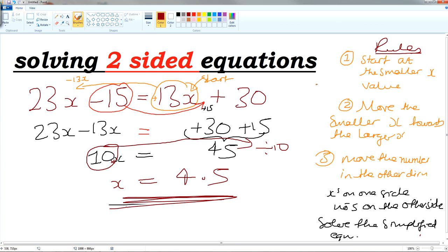And that's the end of that example. So as long as you follow the rule start at the smaller x value, move it towards the larger, move the numbers in the opposite direction. Numbers are on one side, x's on the other side, simplify and solve. Job's done. I'm going to pause the video. We're going to do one more with the double brackets in here as well.